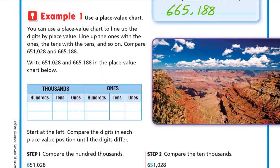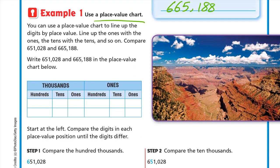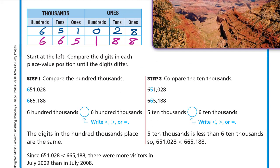Example one: use the place value chart. You can use a place value chart to line up the digits by place value — line up the ones with the ones, the tens with the tens, and so on. Compare 651,028 and 665,188. We write these two numbers in the place value chart. The first number from right to left: 8, 2, 0, 1, 5, 6. The second number: 8, 8, 1, 5, 6, 6.